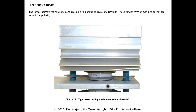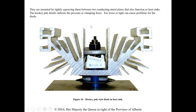High current diodes are available in a shape called hockey puck. These diodes may or may not be marked to indicate polarity. They are mounted by tightly squeezing them between two conducting metal plates, which also function as heat sinks. The hockey puck datasheet indicates the required pressure or clamping force — you may need to use a torque wrench. If it's too loose or too tight it could cause problems. The heat sink shown comes complete with a torque indicator, so a torque wrench may not be necessary — that indicator line shows you what foot-pounds you're at.